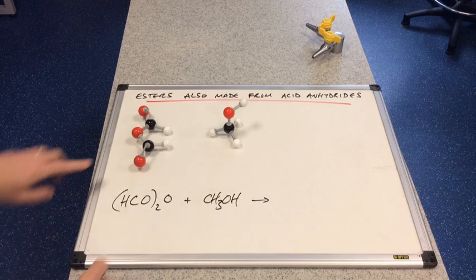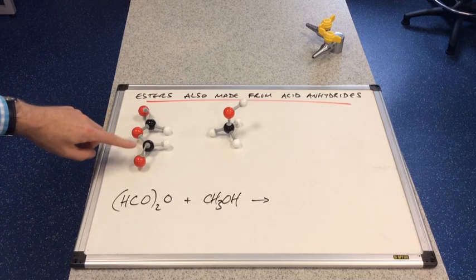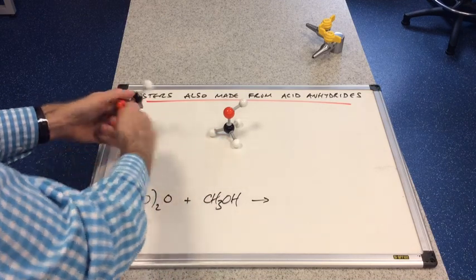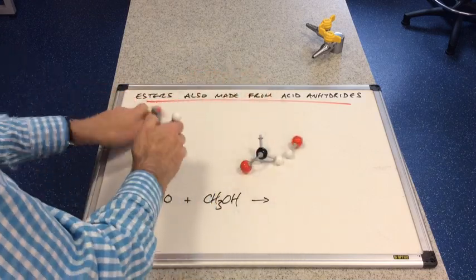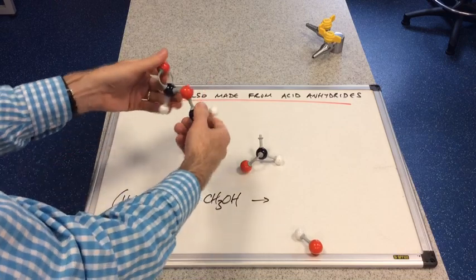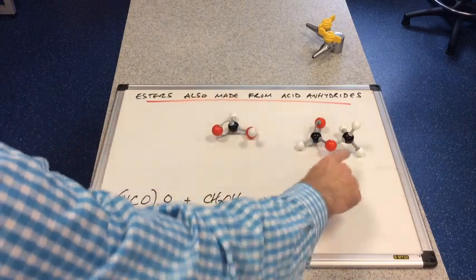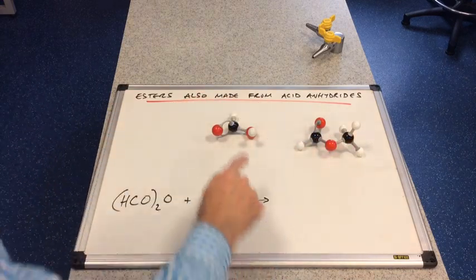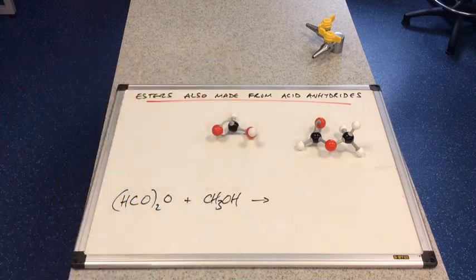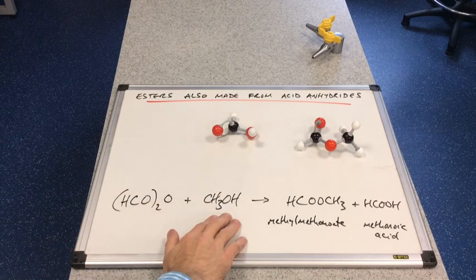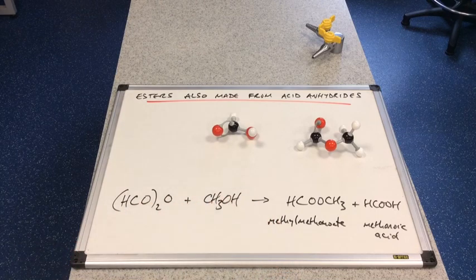Let's do one more example: methanoic anhydride and methanol. Applying the same process, we get the ester methyl methanoate, and because it was methanoic anhydride, we also get methanoic acid. This type of reaction — acid anhydride with an alcohol — does not need the concentrated sulfuric acid catalyst, though it would still need a little heat.